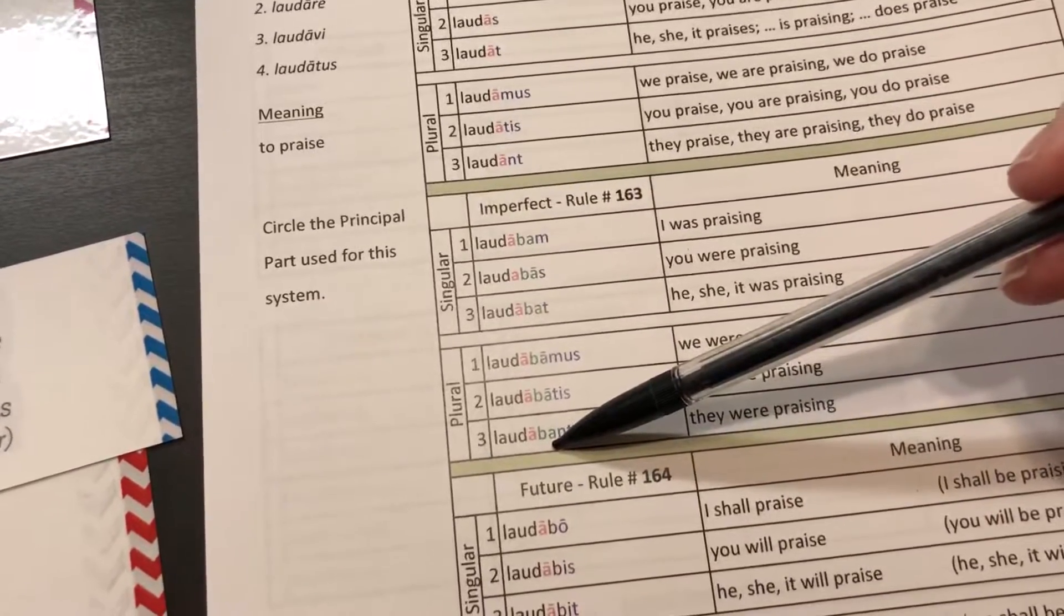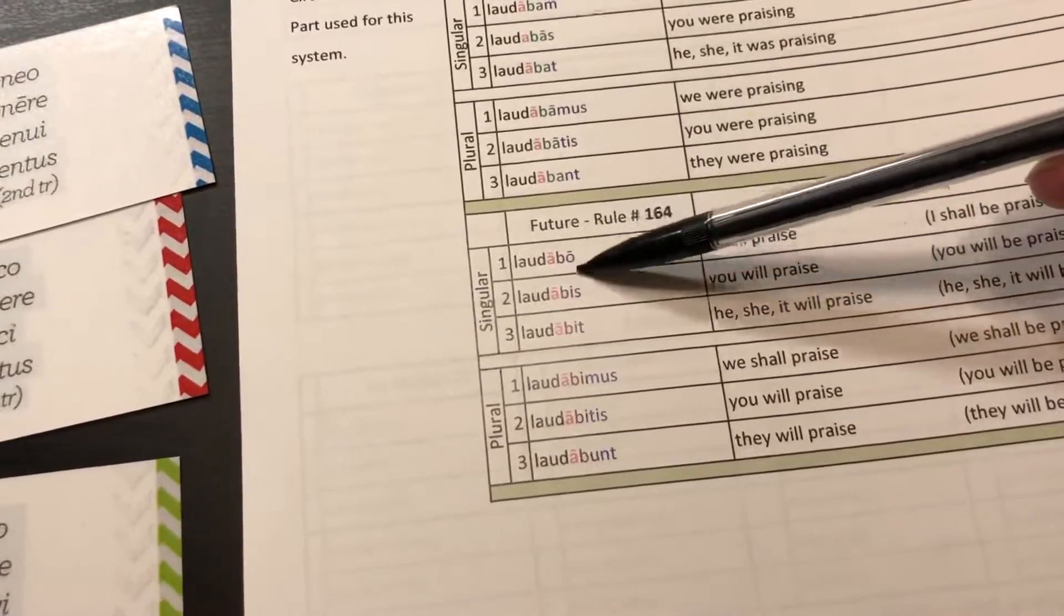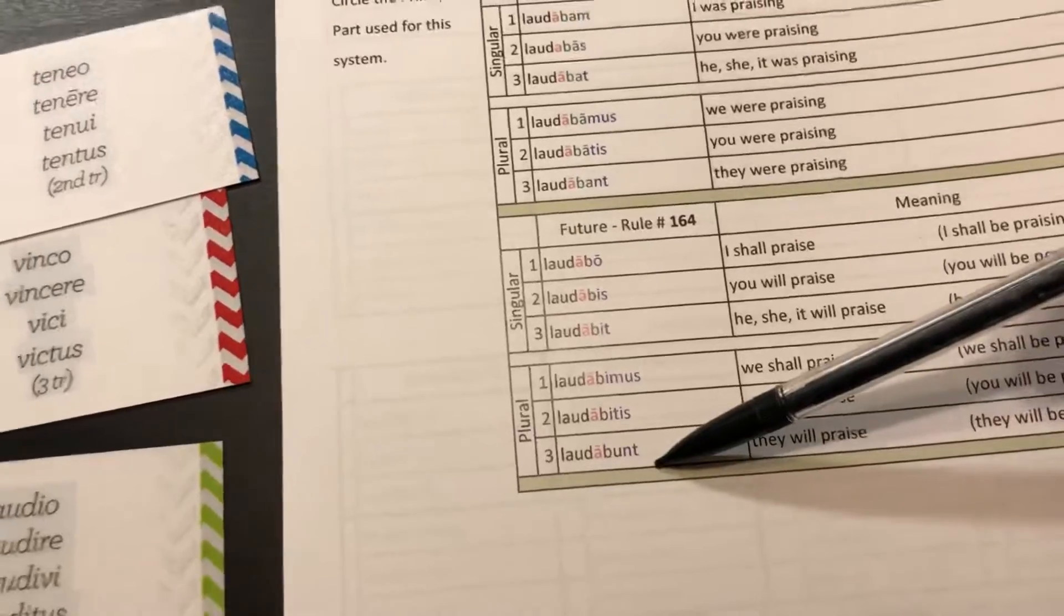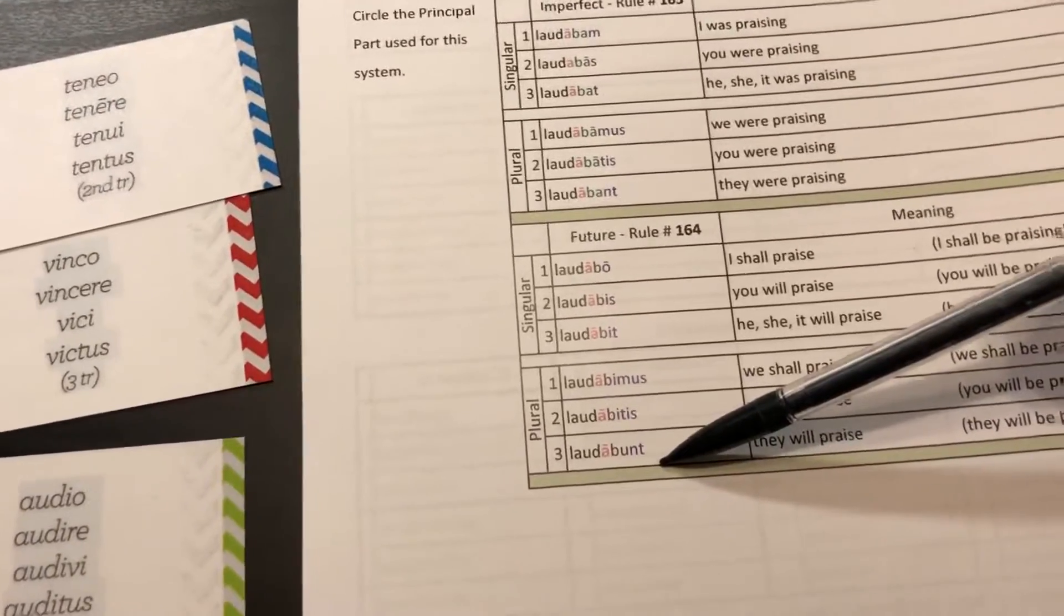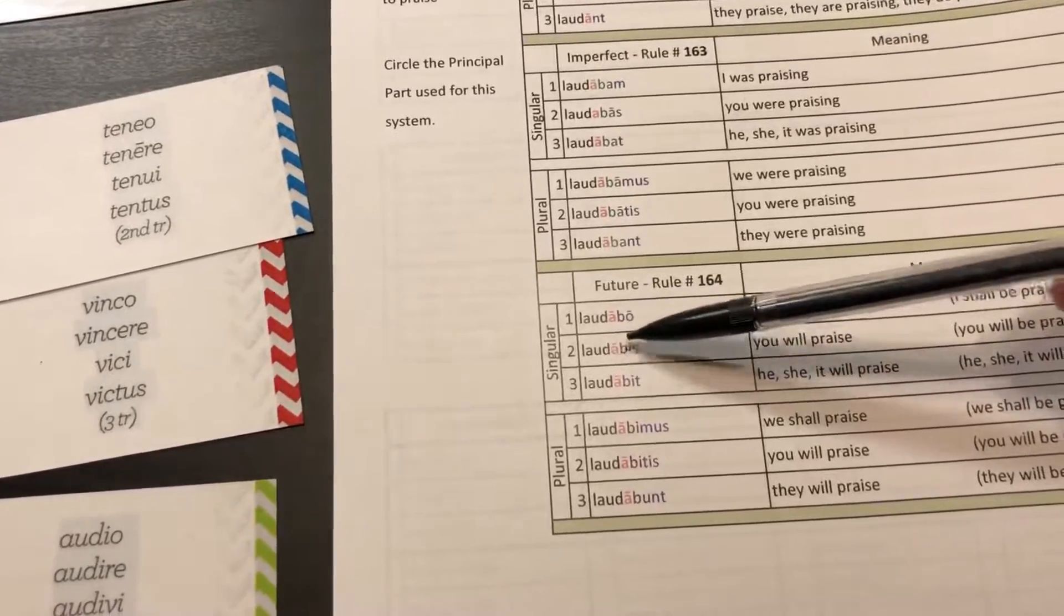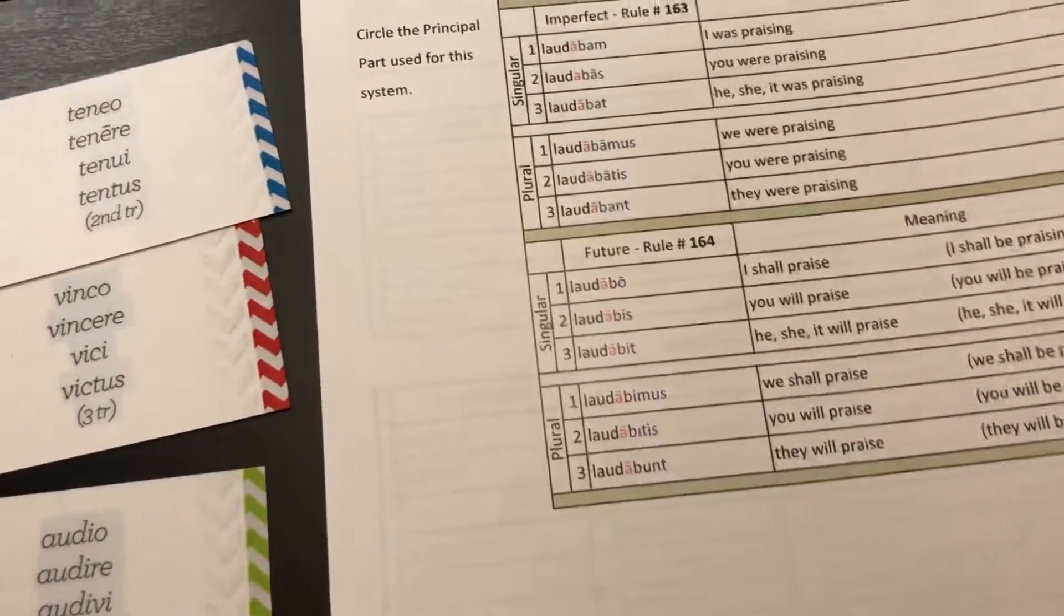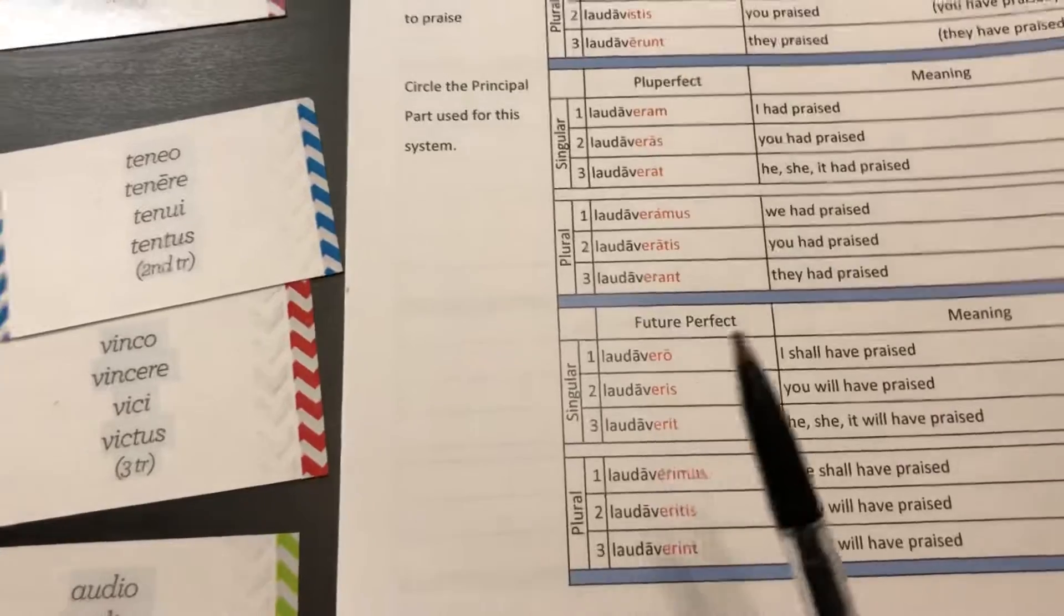Down here in the future, again those personal pronoun markers. I don't know why they look purple here, but they're blue. And then the future tense is in purple. It's a B-I or a B-U. And then you can see that same thing over here in the perfect tense.